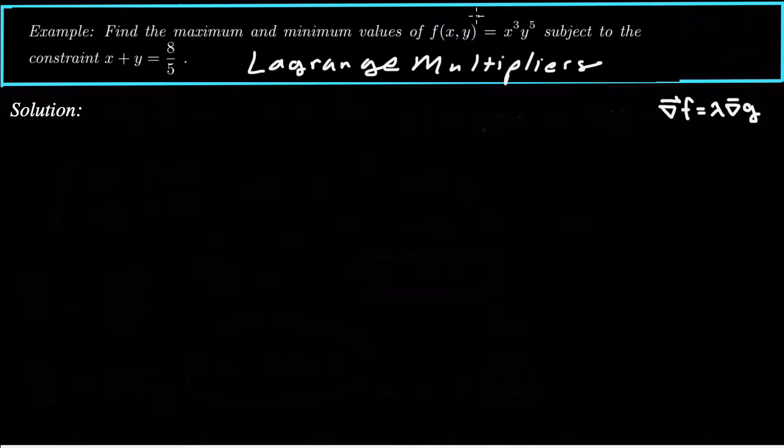So what is f? f is the function x cubed y to the 5th. g is right here, so this is g of x, y. g of x, y equals x plus y. So actually this one's not too bad as far as g goes.